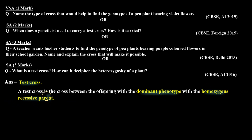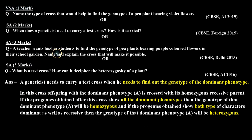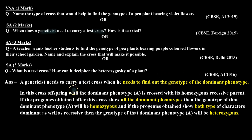We cross the offspring with the dominant phenotype with the homozygous recessive parent. This is called a test cross. A geneticist needs to perform a test cross when they want to know the genotype of a dominant phenotype. In a test cross, we take a dominant phenotype organism and cross it with its homozygous recessive parent.